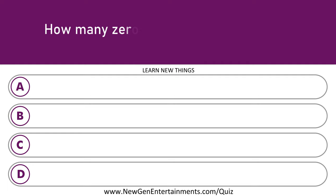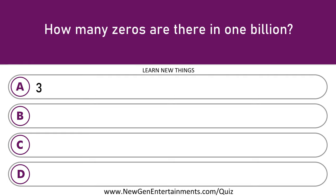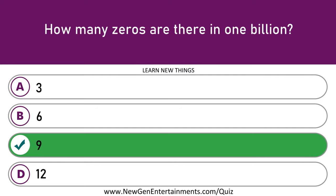How many zeros are there in 1 billion? 9.